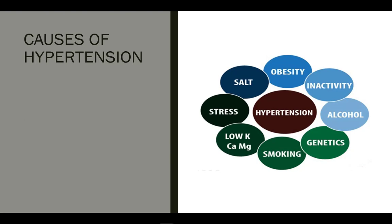Blood pressure naturally increases with age, so the risk of developing high blood pressure is more likely in those over 40. Ethnicity also plays a role through genetics. Both African Americans and Native Americans have a higher than average risk of developing high blood pressure. While there are some genetic and lifestyle-related factors associated with the disorder, it is important to remember that anyone can develop high blood pressure.